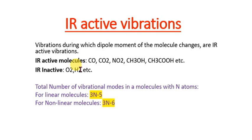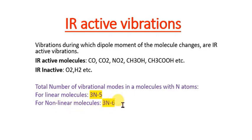The total number of vibrational modes in a molecule is given by two formulas. For a linear molecule, total vibrational modes = 3N − 5. For a non-linear molecule, total vibrational modes = 3N − 6. We will apply these to one linear and one non-linear molecule.